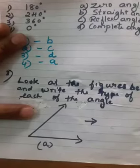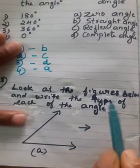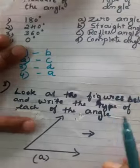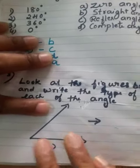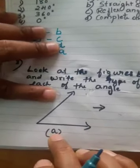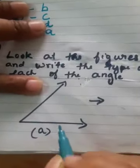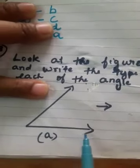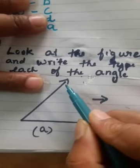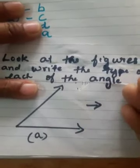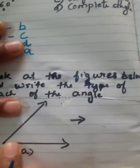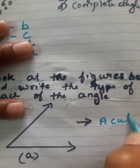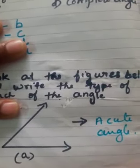Question 3: look at the figures and write the type of each angle. In the first figure, the measure is less than 90 degree — we can say approximately 40 to 45 degrees. The measure is not given, but we can say it is less than 90 degree, so it is an acute angle.